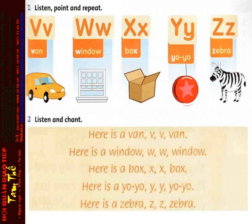Here is a box. X. X. Box. Here is a yo-yo. Y. Y. Yo-yo.